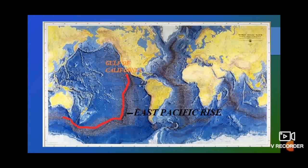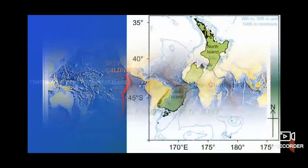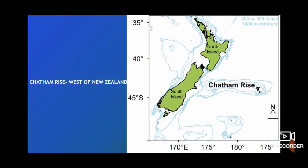In the central parts of the Pacific Ocean, you can see the Hawaiian Swell, which is around 2,000 meters deep. The Hawaii and the Honolulu Islands are located here. Towards the west of New Zealand, you can see the Chatham Rise. Other significant features include the New Zealand Ridge, the Fiji Plateau, and the New Guinea Rise.